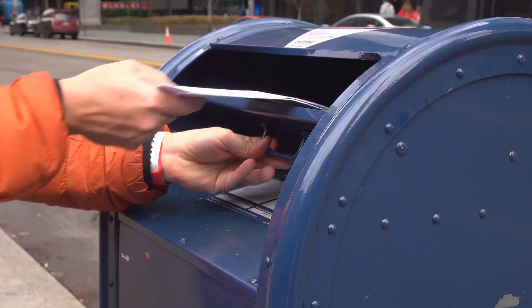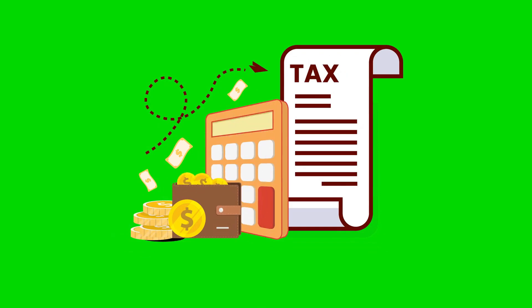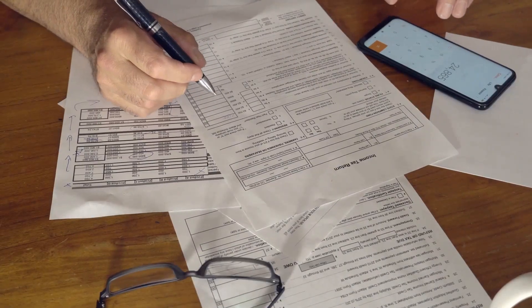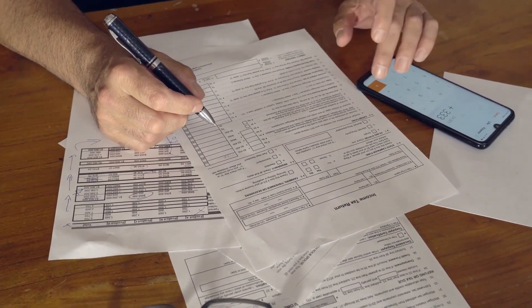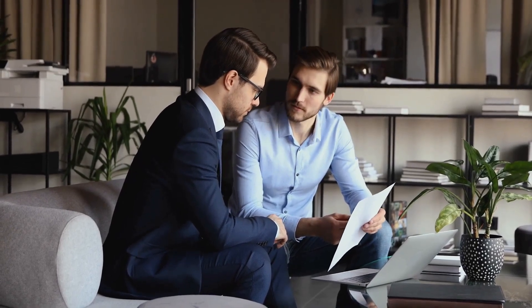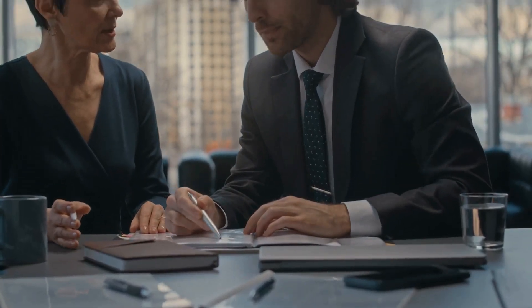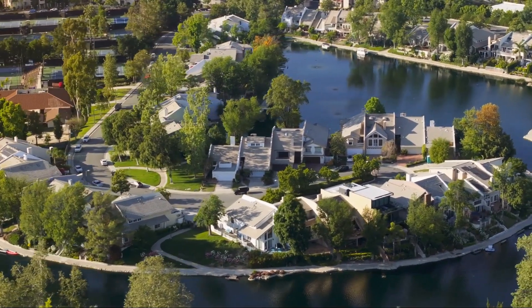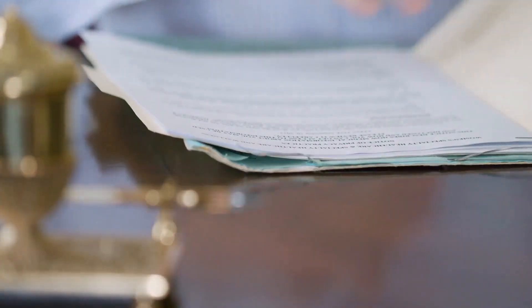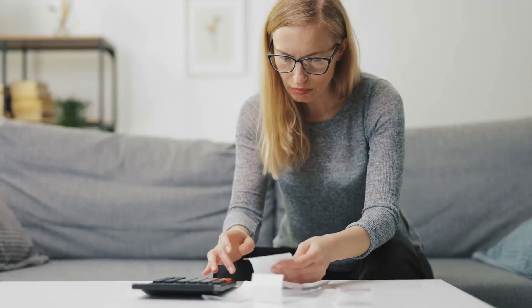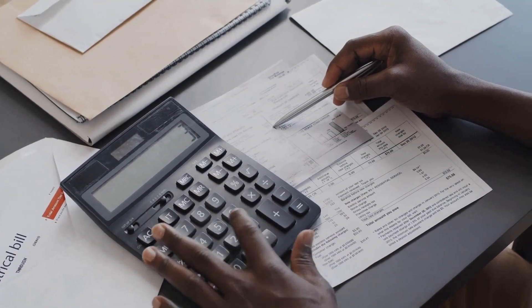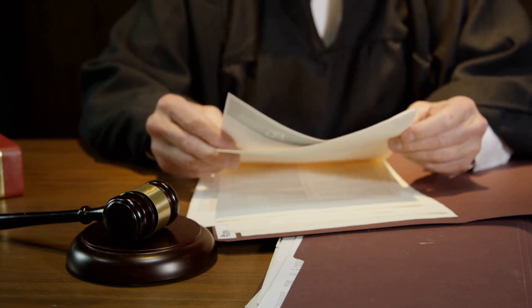In addition to general debts of the estate, there may be tax obligations that need to be addressed in probate. This includes filing the final income tax return of the deceased individual for the year of their passing and paying any estate taxes that may be due. In some cases, the executor may need to negotiate with creditors to settle debts for less than the full amount owed, helping to preserve estate assets and ensure that creditors receive a fair distribution while minimizing the impact on the beneficiaries. Once the debts are settled, the executor must present a final account of the debt payments to the probate court for approval.